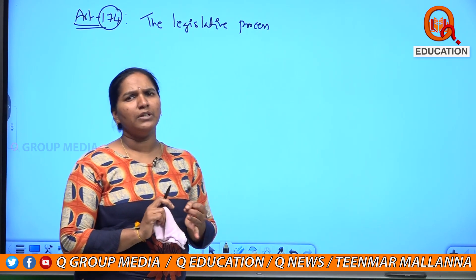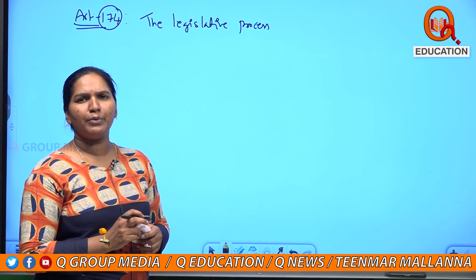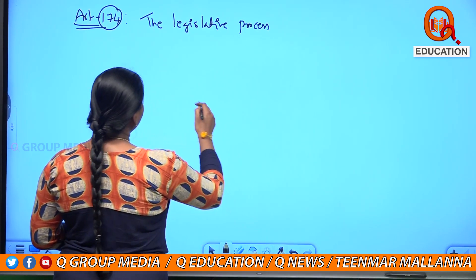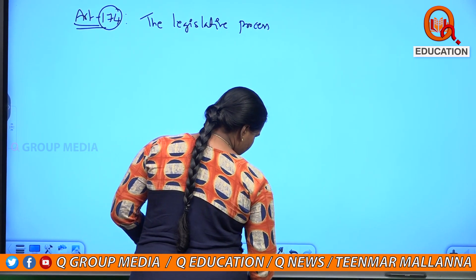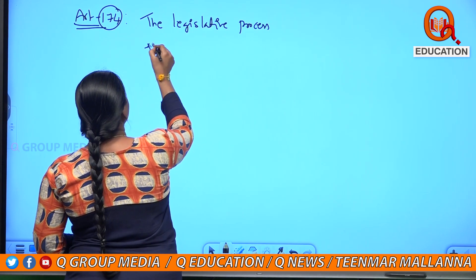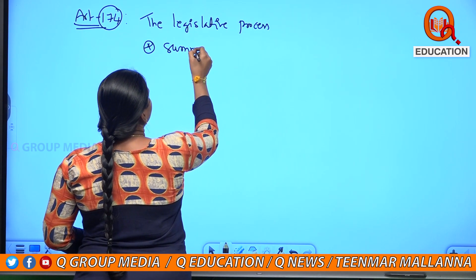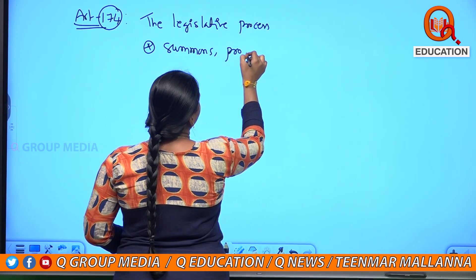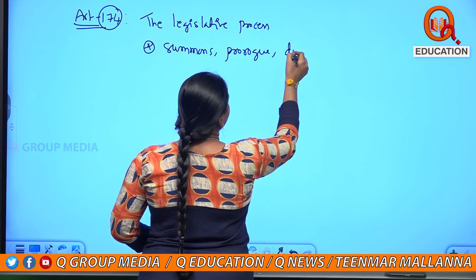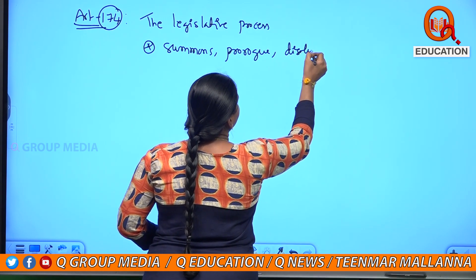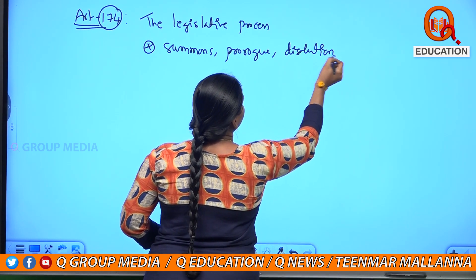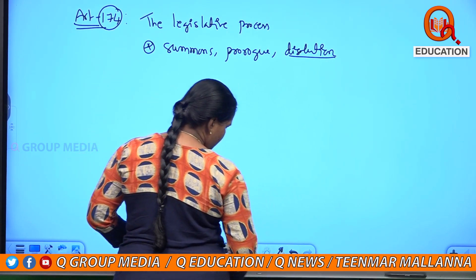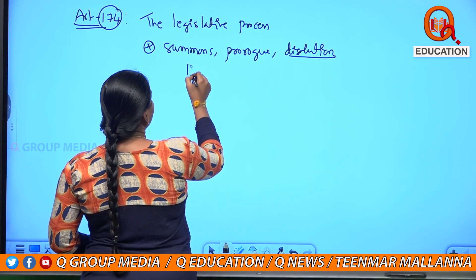The summons, prorogue, and dissolution are carried out by the governor. Dissolution applies only to the assembly, not the council. The governor is empowered to do this process.